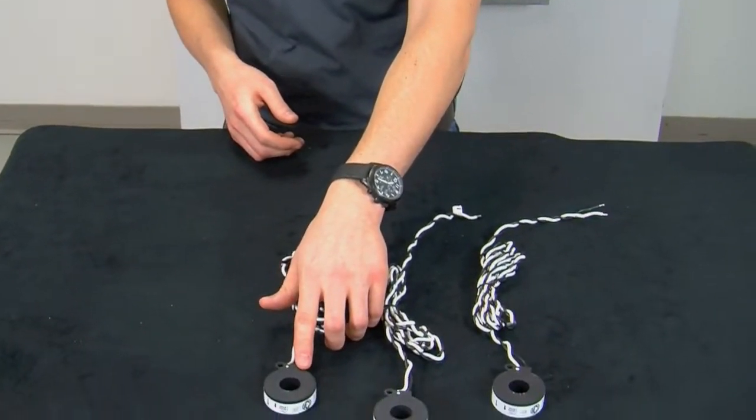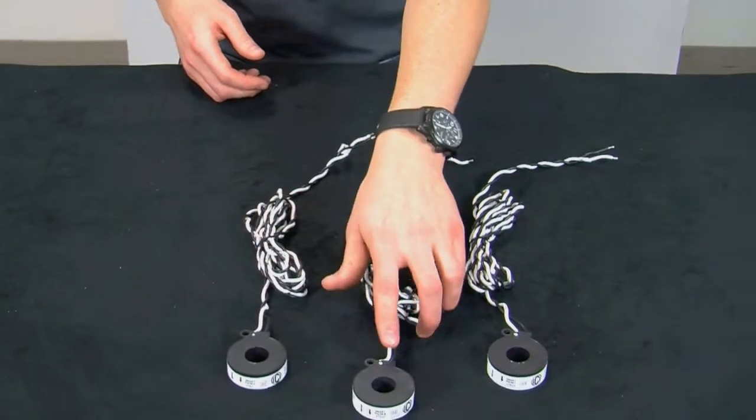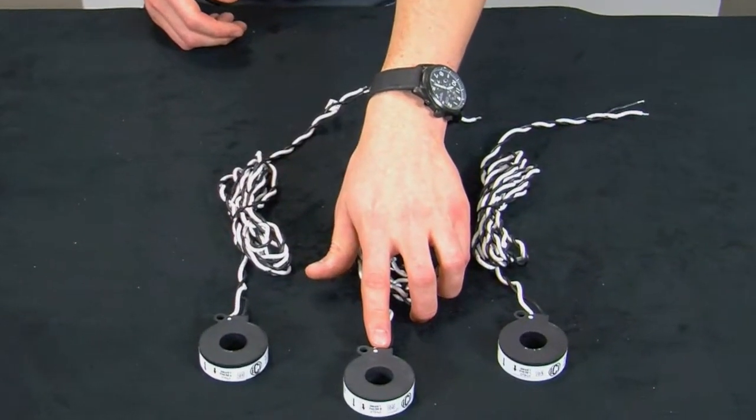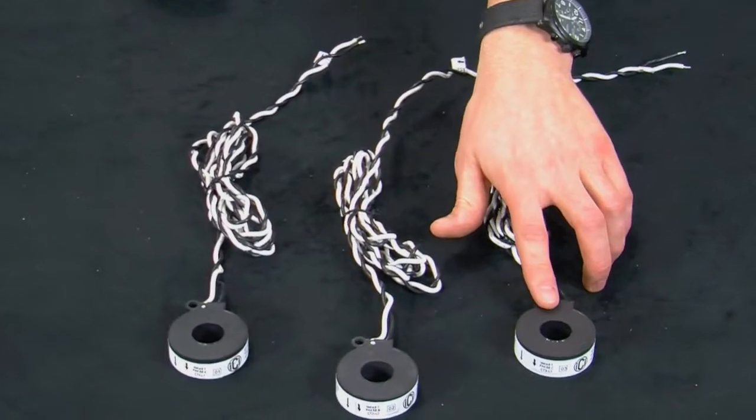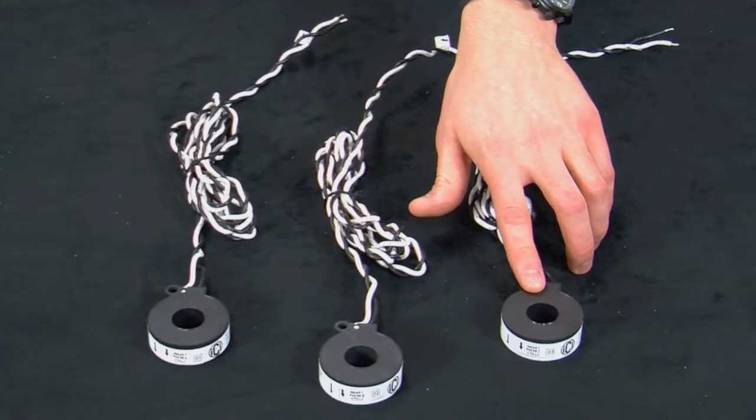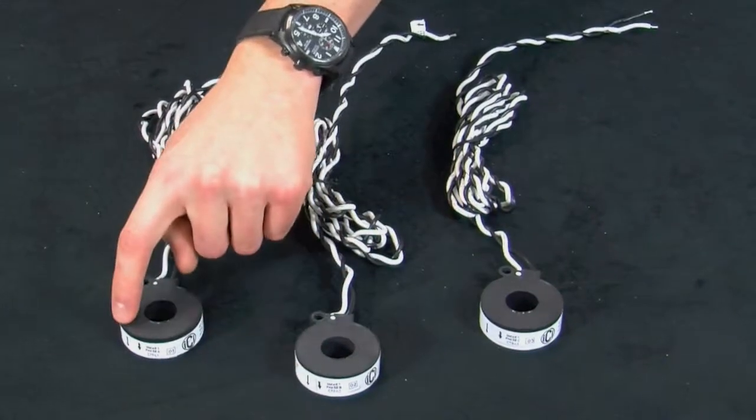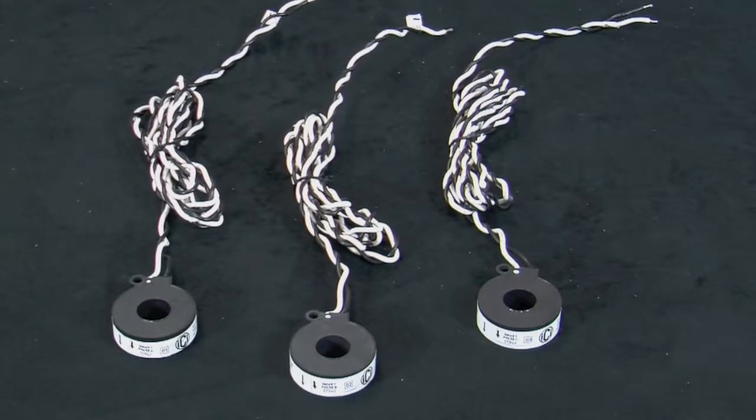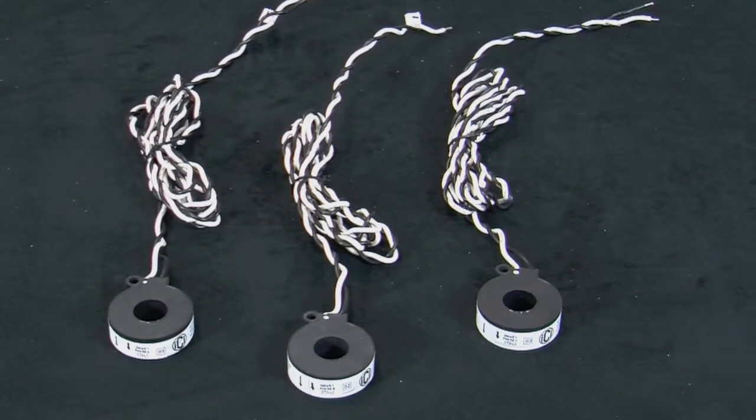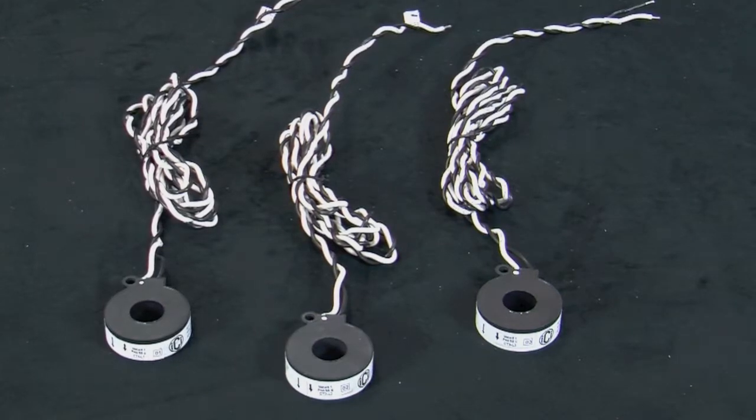CT1 is for phase A or line 1. CT2 is for phase B or line 2. And CT3 is for phase C or line 3. Note the direction arrow on the CTs. This arrow must point in the same direction as the flow of current. So now that we know what each CT is for, let's go ahead and install the CTs.